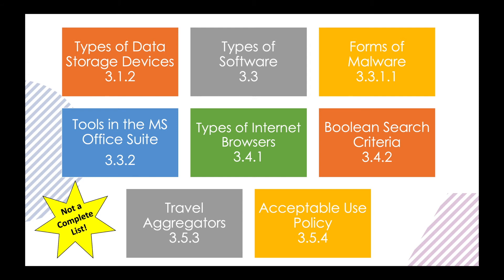Let's look at just a small handful of the key concepts and terms from the technology module. To be clear, this is nowhere near all of them — just a small selection of some important ones. It should give you an idea of the types of things we want you paying attention to. For example, in the top row you see types of data storage devices, types of software, and forms of malware, with section numbers provided for reference. You're welcome to pause the video and take a screenshot of this for your own use. The key terms are often bolded throughout the technology module, making them really easy to identify. You're probably going to end up with a list of dozens of key terms — these are really the things that deserve your attention while studying.